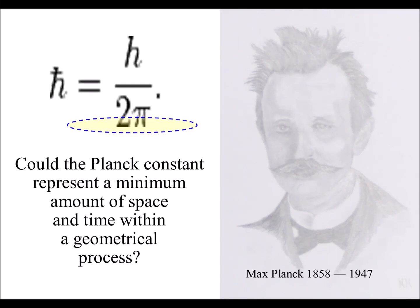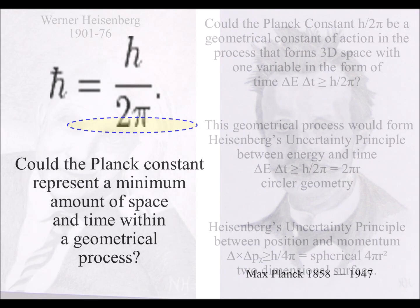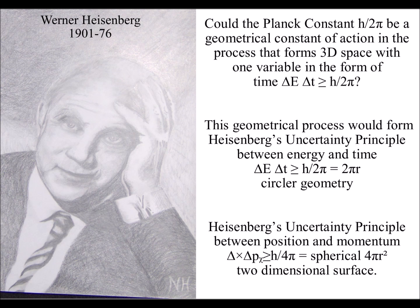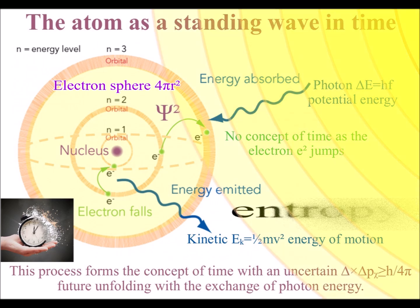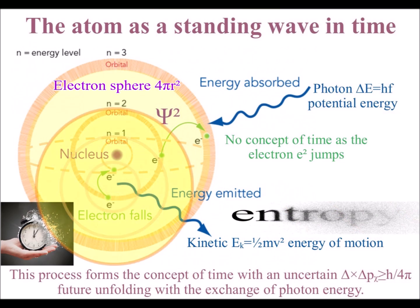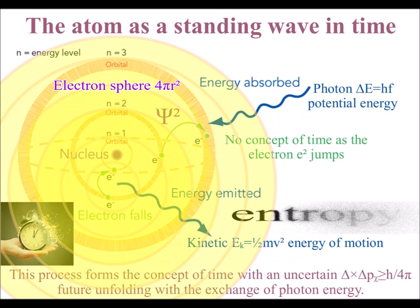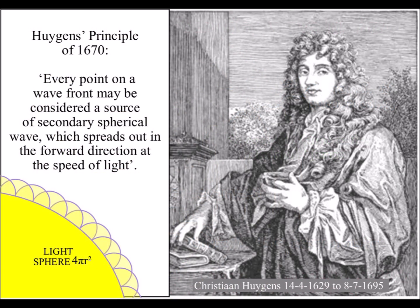Why would our universe have a minimum quantity of space and time? One answer could be that our three-dimensional space and the continuum of time are part of an emergent geometrical process. These videos explain a process of spherical symmetry forming and breaking that is based on Huygens' Principle of 1670, which states that every point on a light wavefront has the potential for a new spherical light wave.